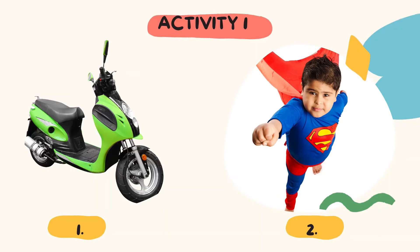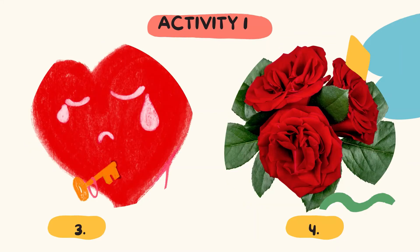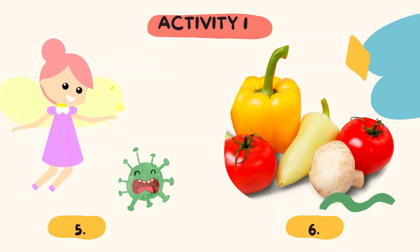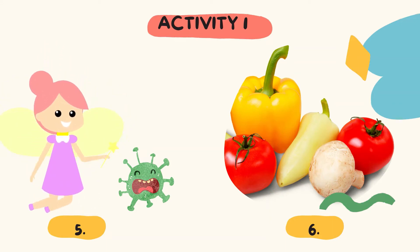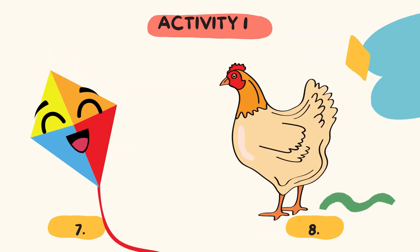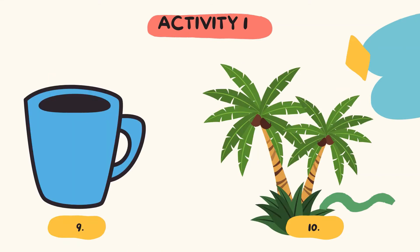First item: a motorcycle. Number two: a young Superman. Number three: a crying heart. Four: roses. Number five: a fairy and a virus. Six: vegetables. Seven: a smiling kite. Eight: a hen. Nine: a mug. Number ten: an image of two trees.